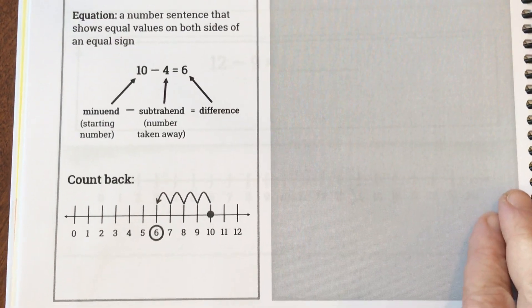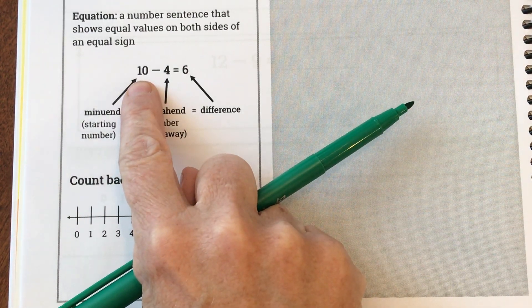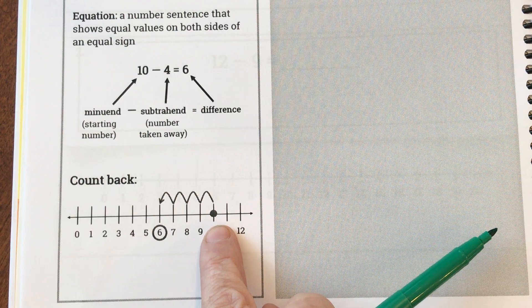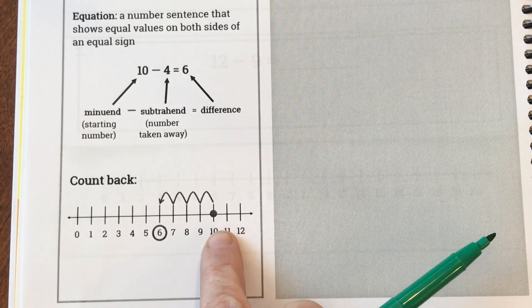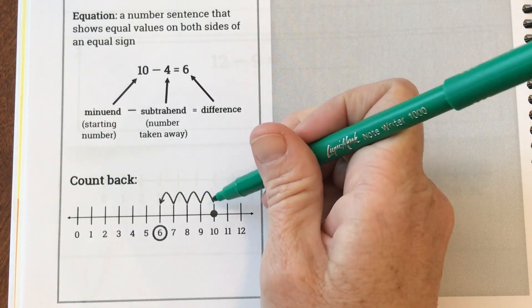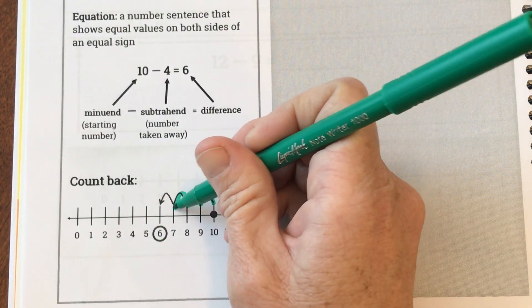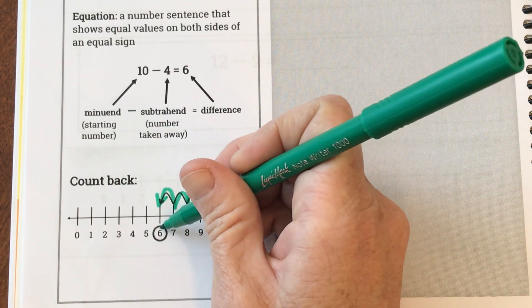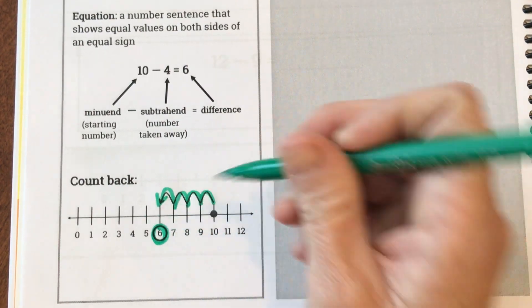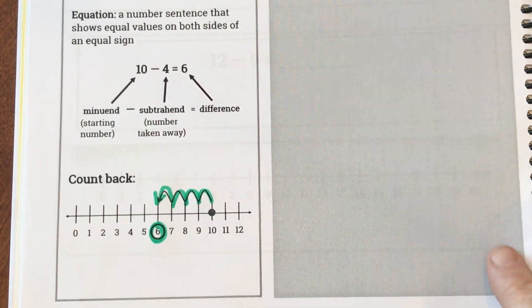And then here comes the example of how they did this. They found the minuend or your starting number on the number line. So they started at 10 and they counted backwards 4. So they went 1, 2, 3, 4 and when they counted back 4, they ended up on a 6. So that tells them the difference.